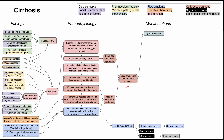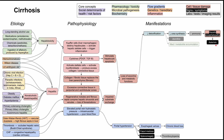Loss of exocrine and metabolic functions means the liver can no longer detoxify as it used to. You won't be able to produce urea to excrete nitrogen, leading to accumulation of ammonia. When ammonia affects the brain, you'll have hepatic encephalopathy, with symptoms like altered mental status and asterixis. You'll also have accumulation of bilirubin leading to jaundice. Medicine metabolism is also affected, so patients with cirrhosis can accumulate drugs they otherwise regularly take.